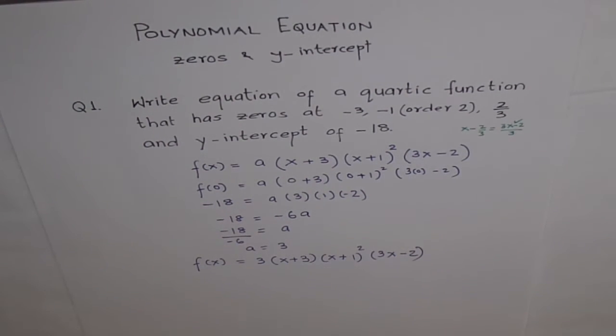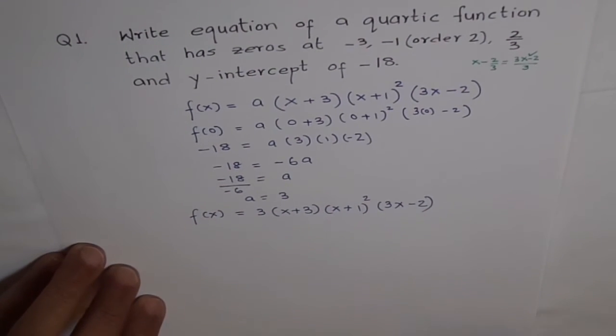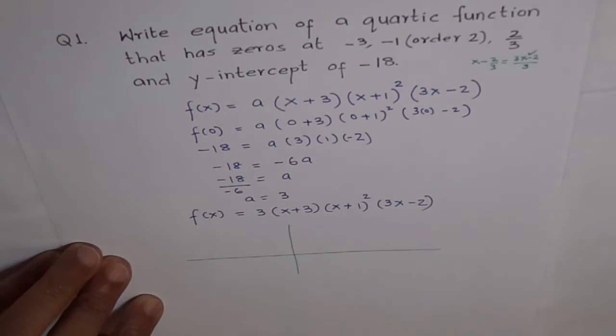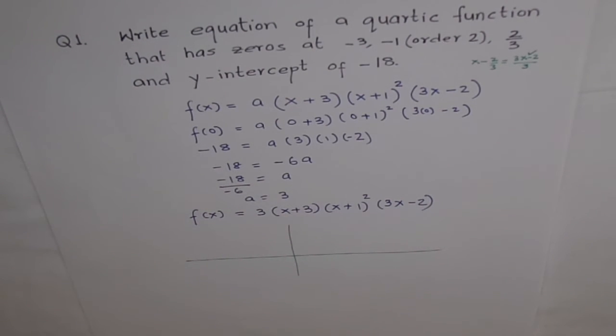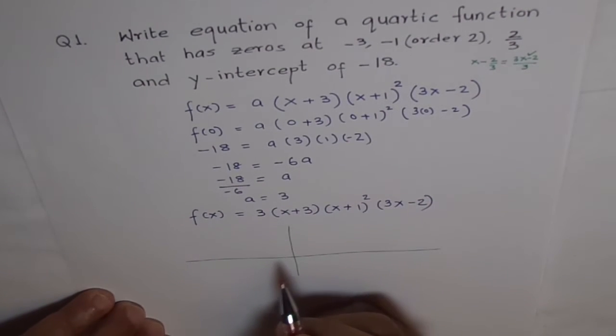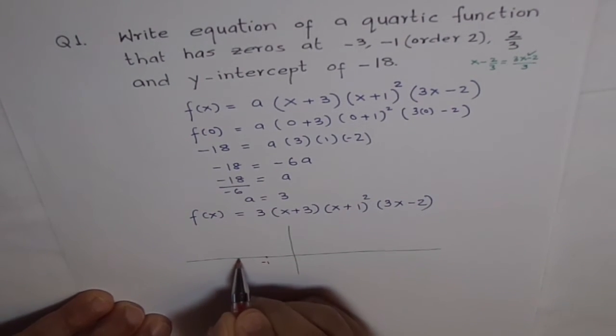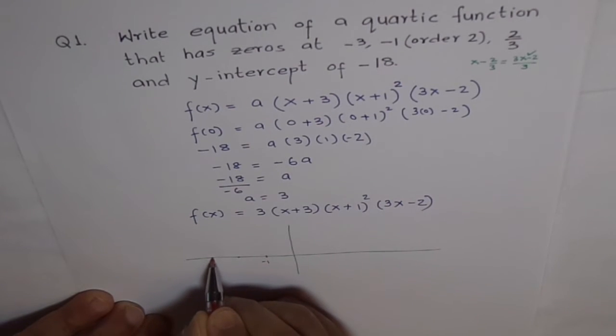Let's try to graph it. How does it look like? So, where are the zeros? Zeros are at minus 3, minus 1, okay? Let's say this is my minus 1. Then this is minus 2 and this is my minus 3.